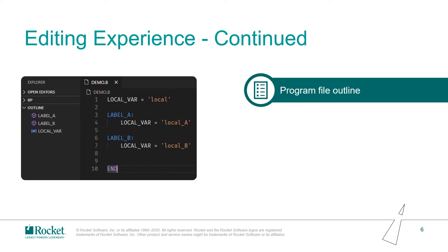The next useful feature is to show the outline of a Basic program file. This is also a very convenient functionality for huge files. Sometimes there are too many functions, labels, and subroutines in a Basic program file. When reading code, the developer needs to scroll up and down to review the content. The outline provides a convenient method to locate specified content quickly. When opening a file, you could find all variables, labels, functions, and subroutines listed in an outline window. Just click the item and the cursor will jump to the related code line.